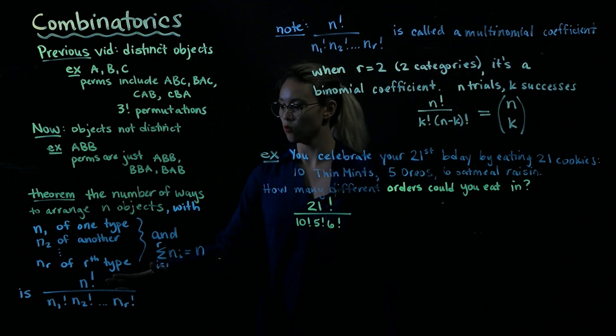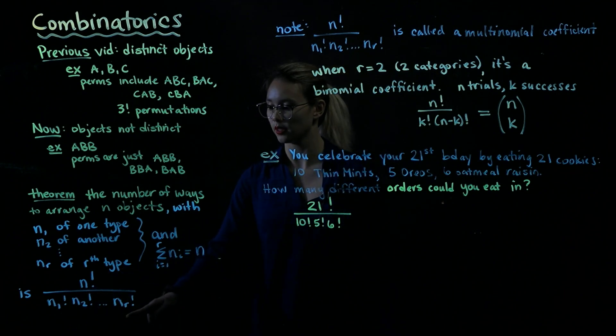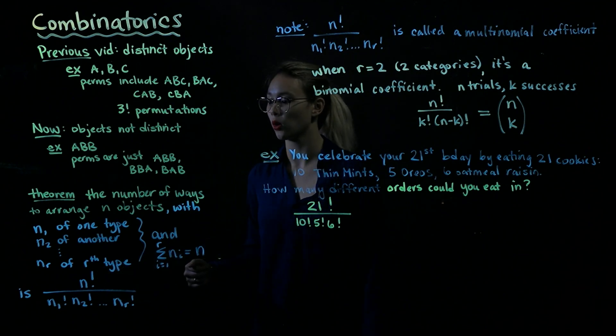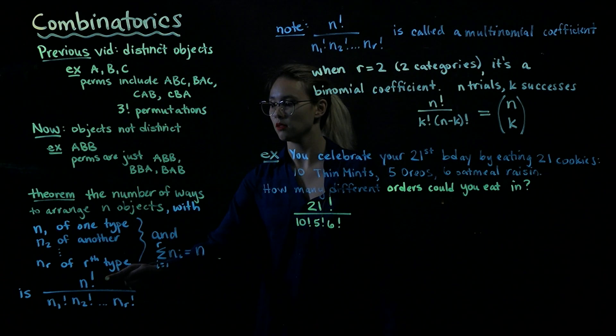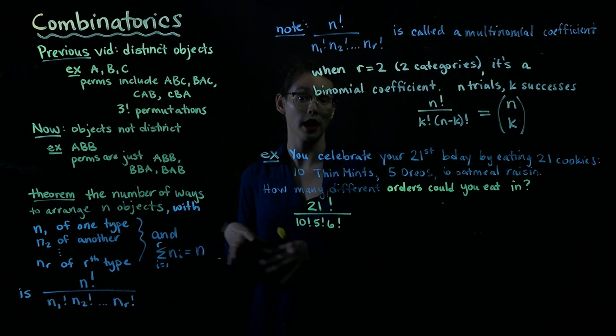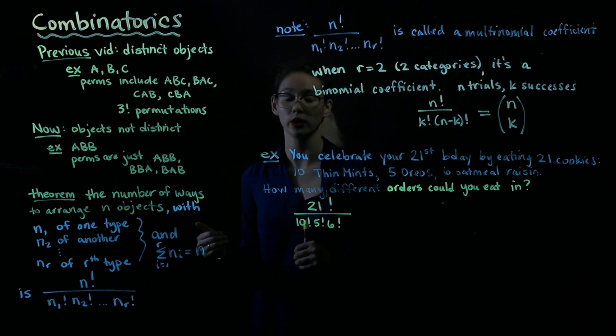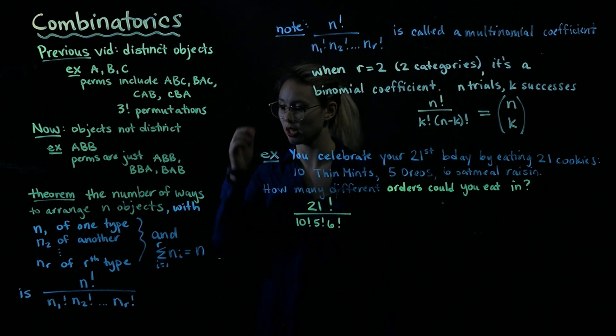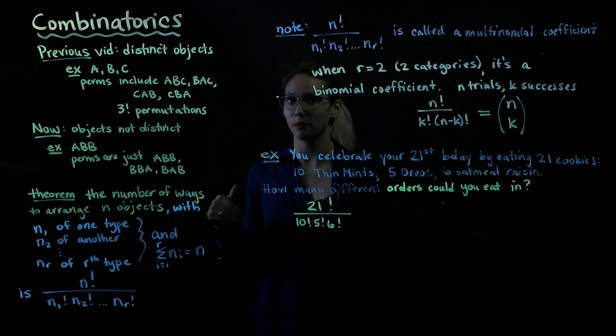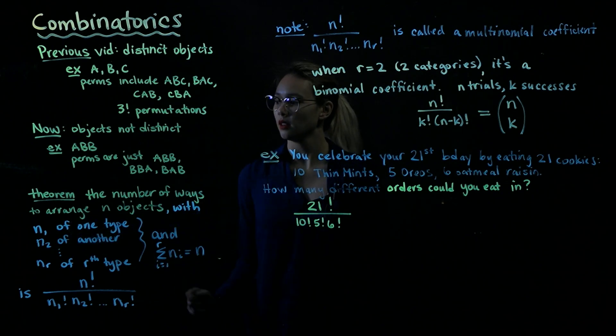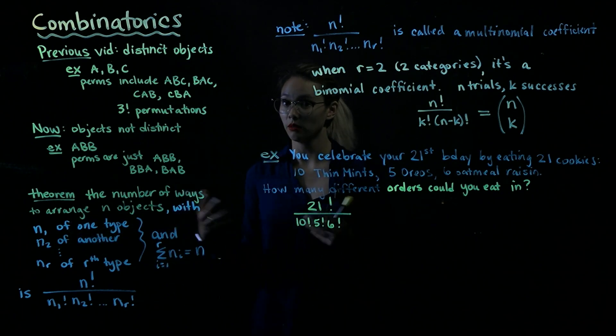So why are we dividing by this? First, what's in the numerator? It's n factorial. So that's saying, imagine these n objects were actually distinguishable from each other. Then we know we would have n factorial different ways to arrange those n objects. But the objects are not distinguishable from each other. So in other words, these n1 objects are all identical, or in other words, exchangeable.